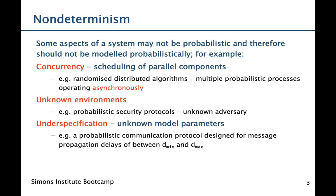Third, we might have systems which are under-specified. We might not know the precise values for certain model parameters. So we want to consider all possible values — for example, a communication protocol might specify that message propagation delays are between a lower and an upper bound. Here we need to consider all possible values, so we make the choice of delay a non-deterministic choice.